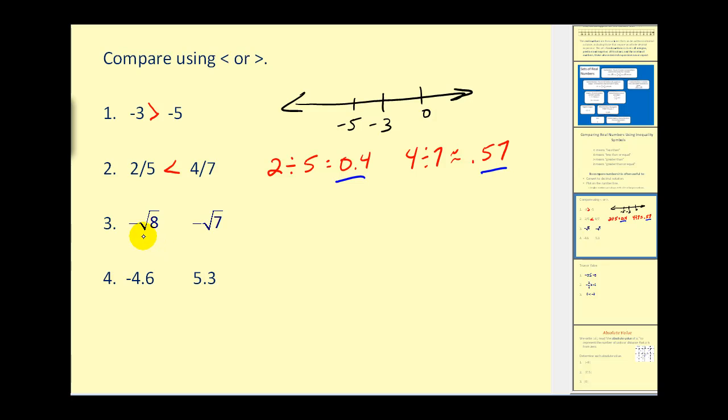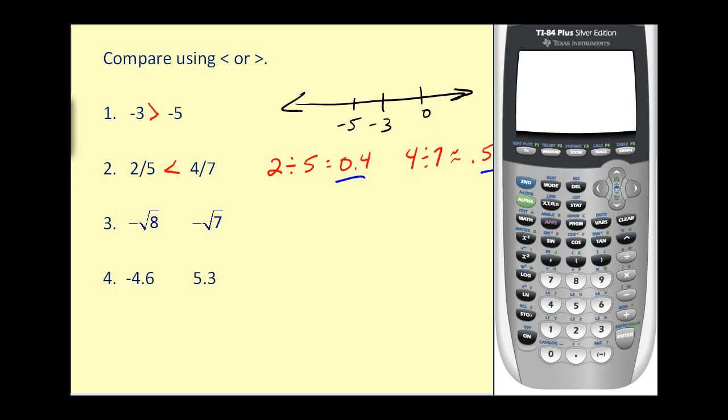The same thing with negative square root 8 and negative square root 7. Let's convert those to decimal form. So let's go ahead and use our calculator. And we'll type in negative 2nd x squared 8, close the parentheses. And then we'll also find the decimal value of negative square root 7.